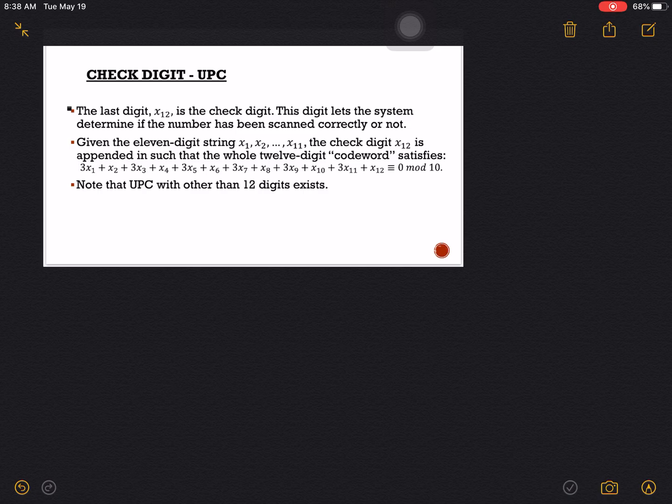If it happens that the sum is not divisible by 10, then automatically the UPC is invalid. Now notice as well that we have multiplier 3.